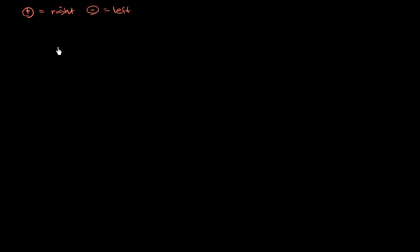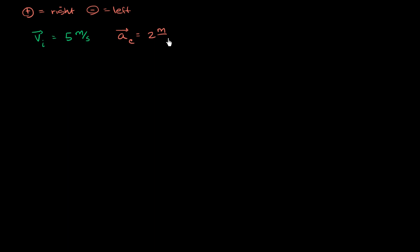If I say that the velocity is 5 meters per second, that means 5 meters per second to the right. If I say it's negative 5 meters per second, that means it's 5 meters per second to the left. Now let's say, just for simplicity, that we start with an initial velocity of 5 meters per second — specifying both the magnitude and direction because of this convention. We know it is to the right. And let's say we have a constant acceleration of 2 meters per second squared. Since this is positive, it is also to the right.